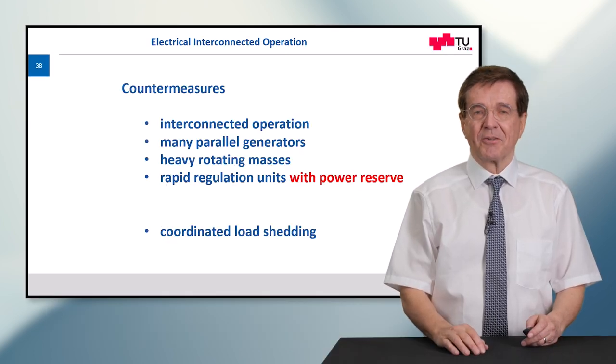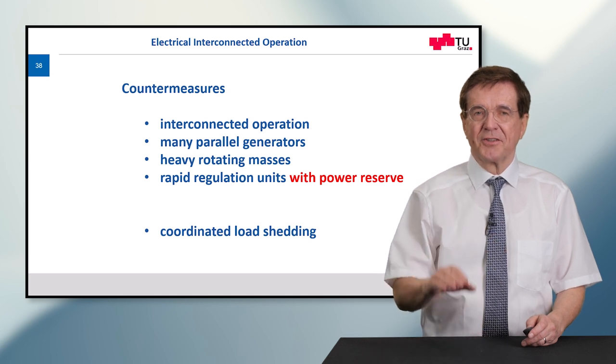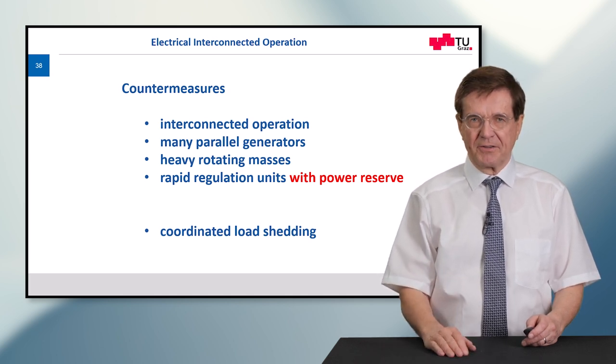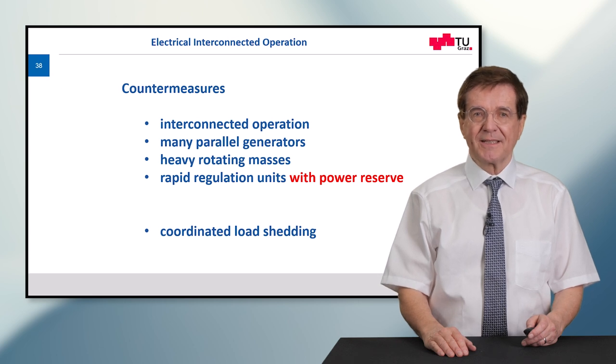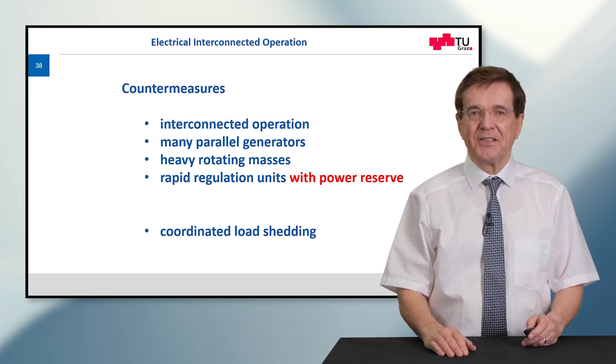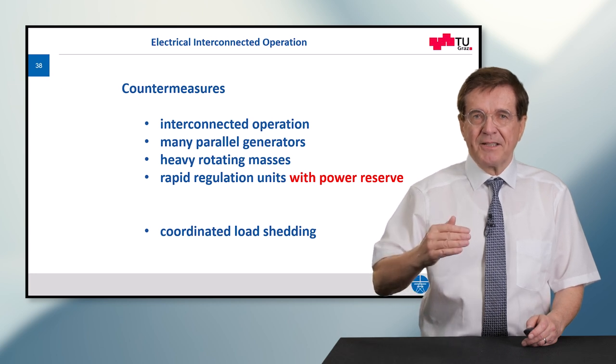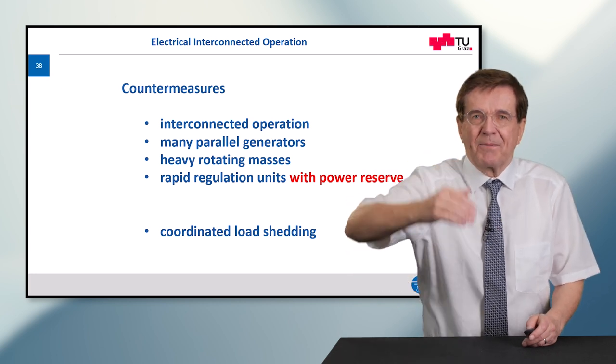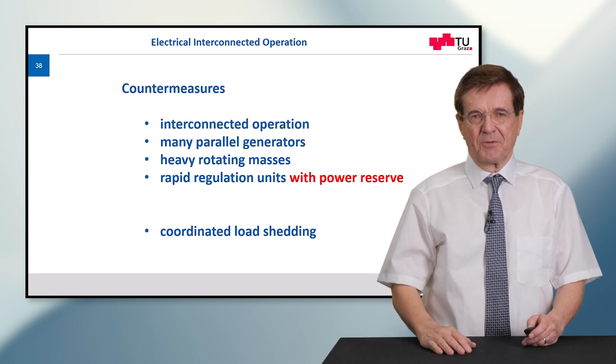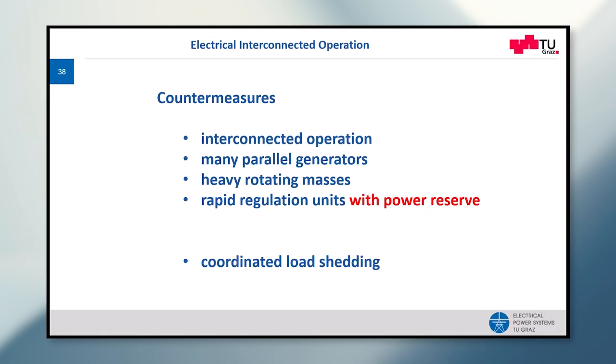So what can be done against this? The countermeasures are first interconnected operation of many parallel generators, heavy rotating masses, and rapid regulation units with power reserve. So there must be generating units that can speed up and step up their power output. The coordinated load shedding is meant to balance the consumption of electric energy with the output of the generating units.